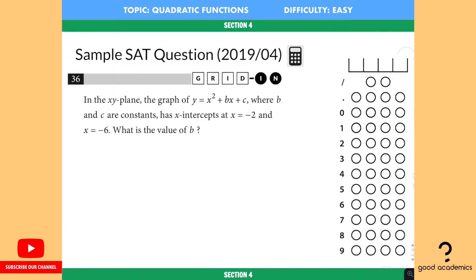So in this question, it says in the xy-plane, the graph of x squared plus bx plus c equals y, where b and c are constants, has x-intercepts at x equals negative 2 and x equals negative 6. What is the value of b?